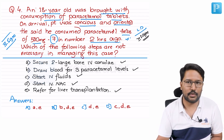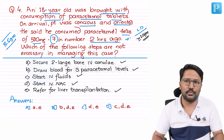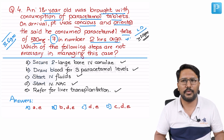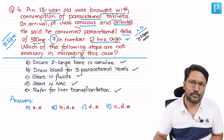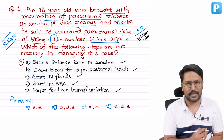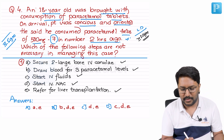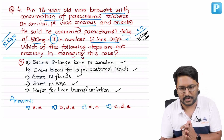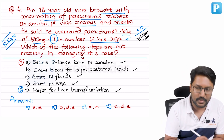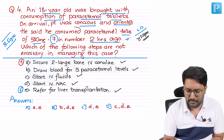Would you secure two large-bore IV cannulas? In any case of poisoning with unstable hemodynamics, the ideal approach is to have two secure large-bore IV cannulas for rapid fluid administration if needed — that's a sensible, true statement. We can confidently rule out referring the patient for liver transplantation at this point — that is a false/unnecessary action.